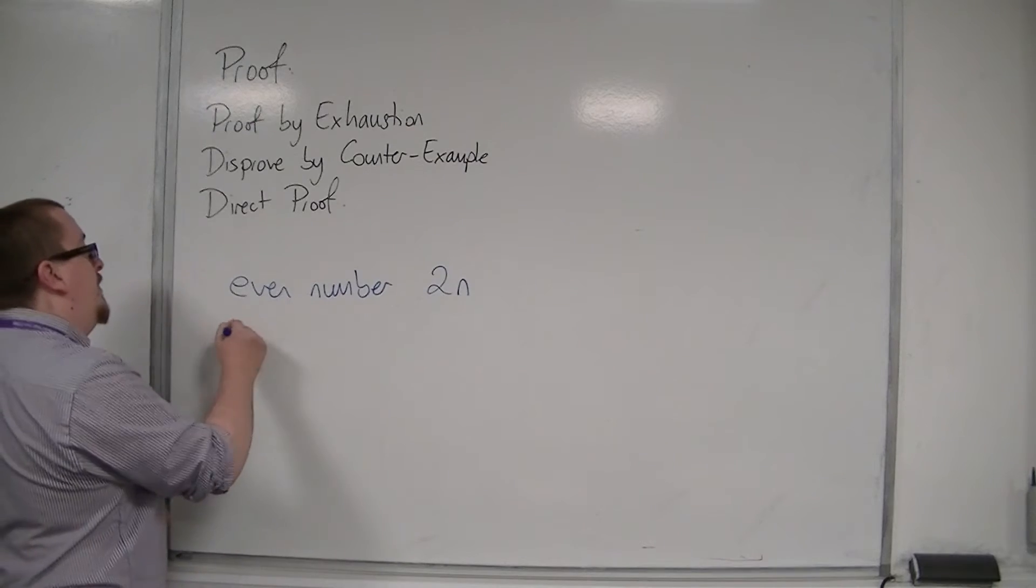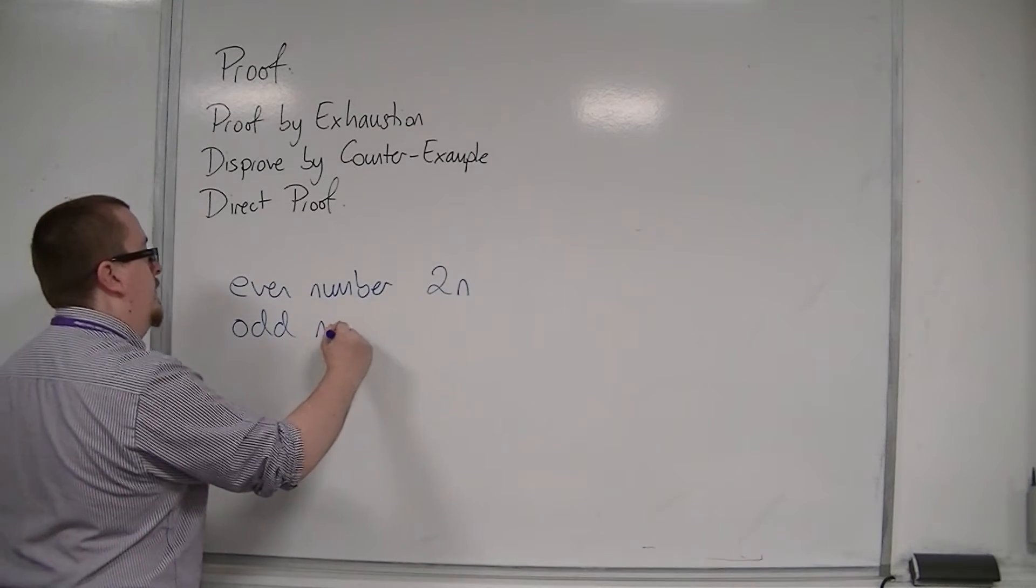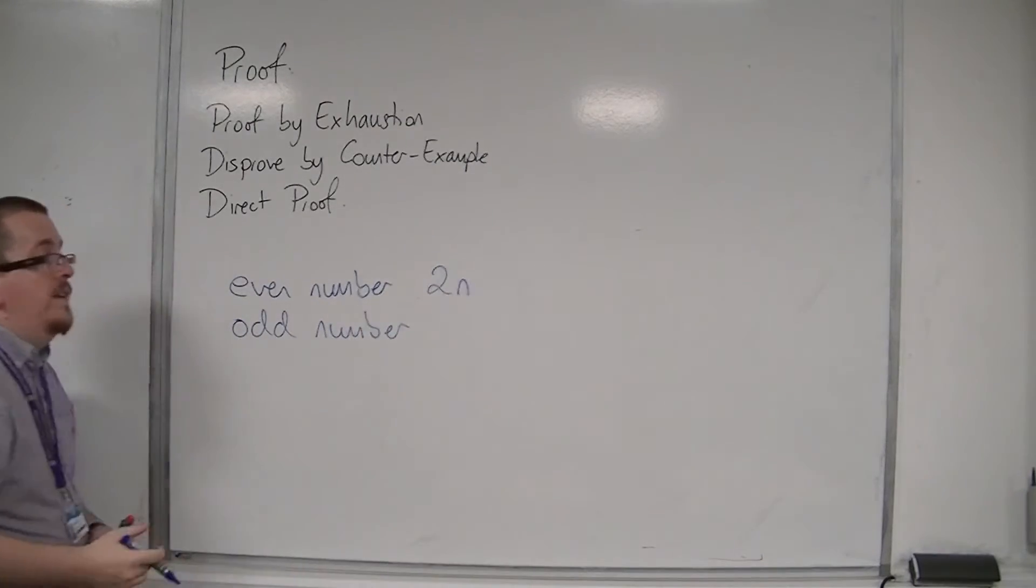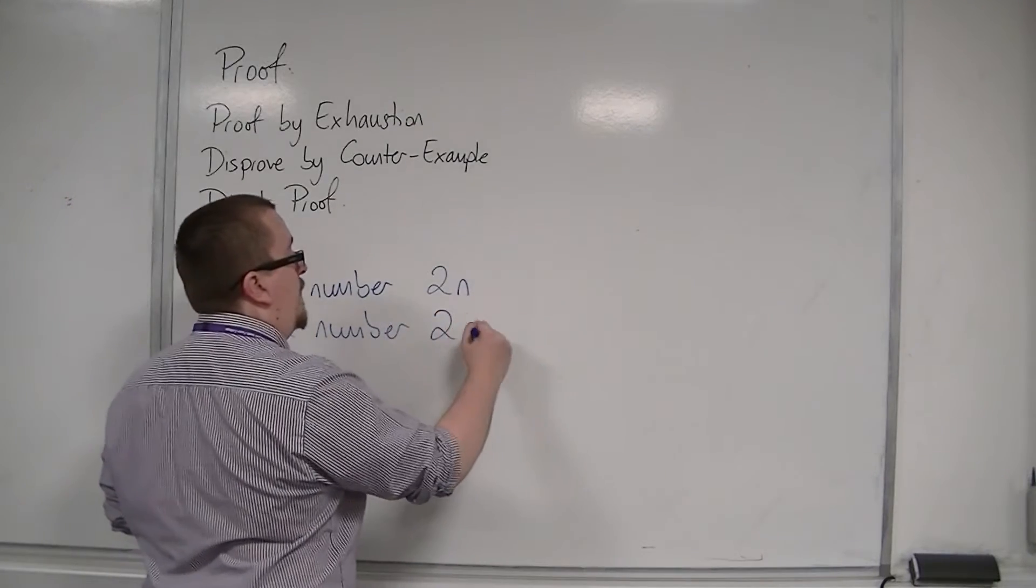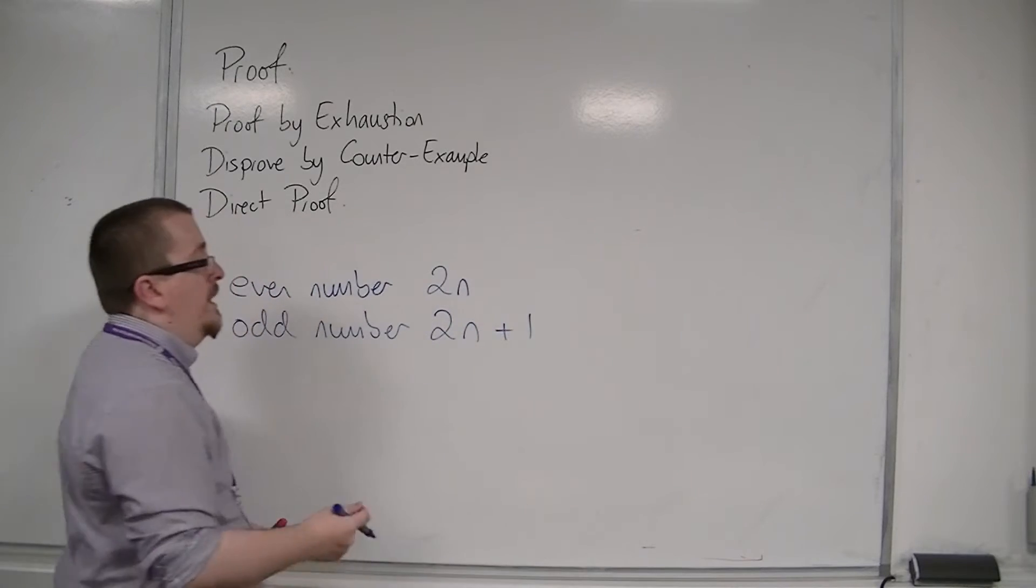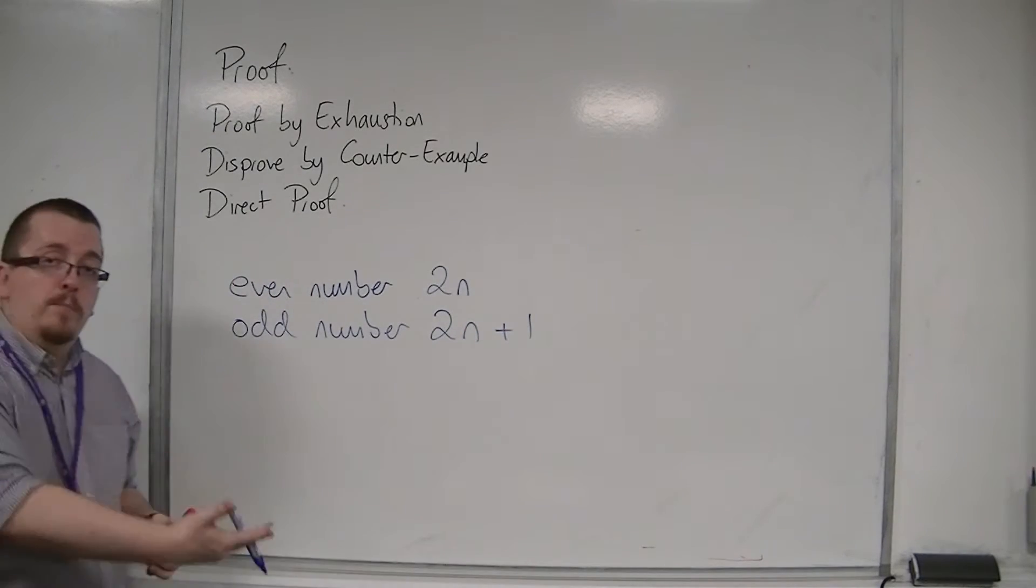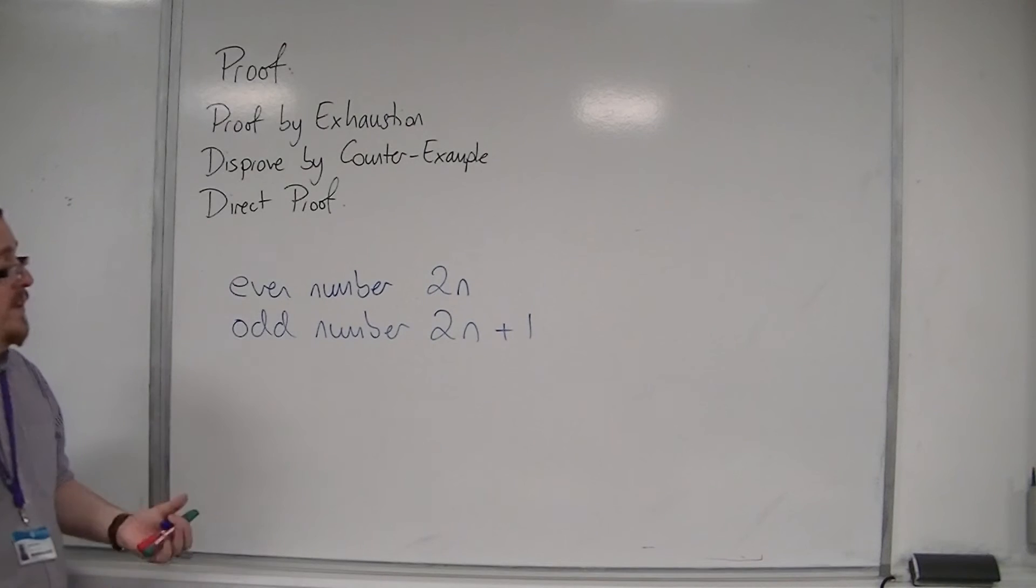Then, if you wanted odd numbers, if that represents an even number, then an odd number could be represented by the one after that number, the next term, so 2n plus 1. So an odd number could be represented like that.